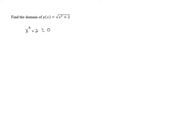Now, I'm going to claim that this is always going to be true, no matter what x is. To see that, what I want to do is subtract 2 from both sides of the inequality. That leaves x squared alone on the left, and then on the right, this is greater than or equal to negative 2.